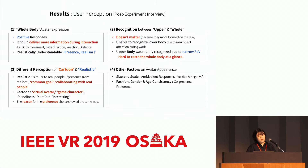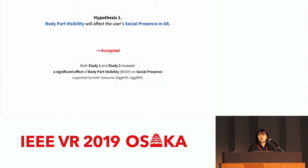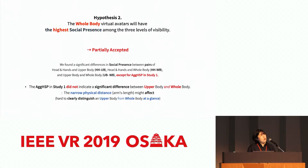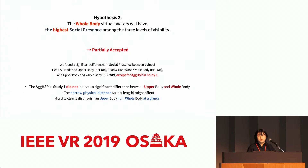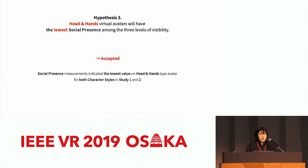Please check the details in our paper. We verified the five hypotheses based on statistical analysis. The experimental results supported hypothesis one because both studies revealed a significant effect of body part visibility on social presence. We partially accepted hypothesis two — significant differences were found between relevant pairs, except in study one — because the narrow physical distance between user and avatar in study one may have affected the result. The results strongly supported hypothesis three, as all aggregated social presence scores indicated the lowest values under the head-and-hands condition for both character styles in studies one and two.